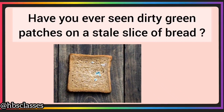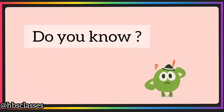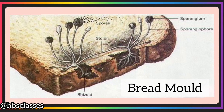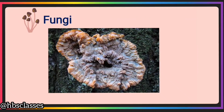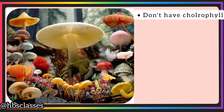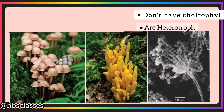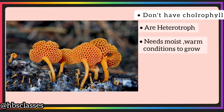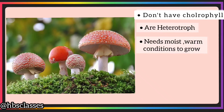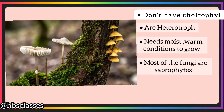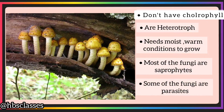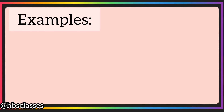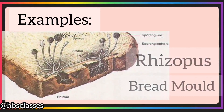Have you ever seen dirty green patches on a stale slice of bread? These are actually a kind of microorganism commonly called bread mold. It belongs to a group called fungi. Fungi are a large group of organisms which do not have chlorophyll and hence cannot prepare their own food. Some fungi look like plants but cannot make food like plants do. Fungi need moist and warm conditions to grow. Most fungi are saprophytes, which feed on dead remains of plants and animals. Some fungi are parasites that feed on living things and cause diseases. Examples include Rhizopus (bread mold), Penicillium, and Aspergillus.